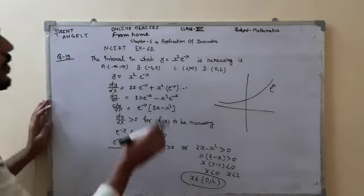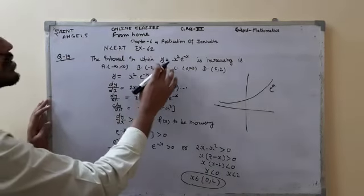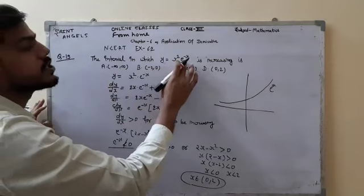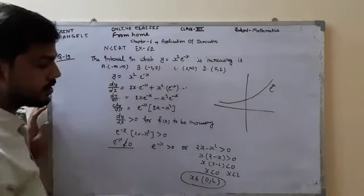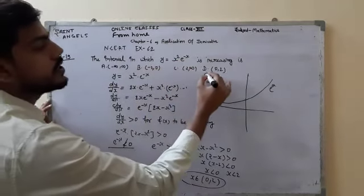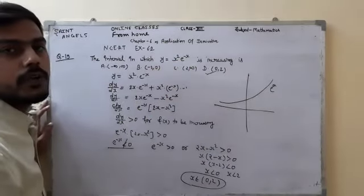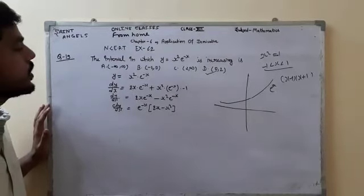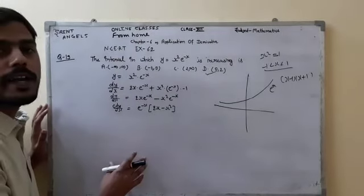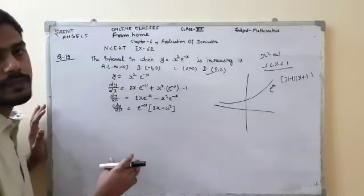So the interval for which y = x²e^(-x) is increasing is (0, 2), and option D is the correct answer. Please pause the video and note it down. We can also solve this question by the number line method.